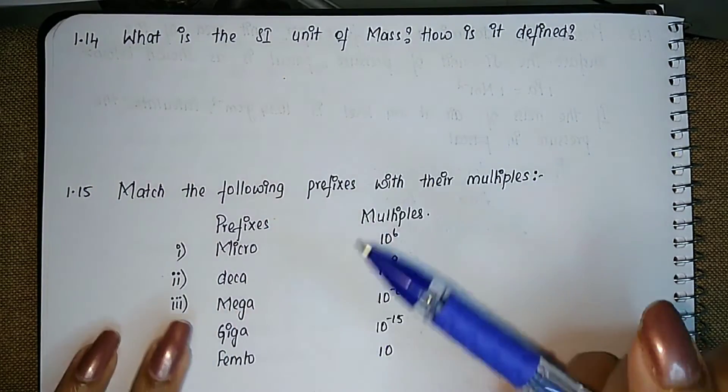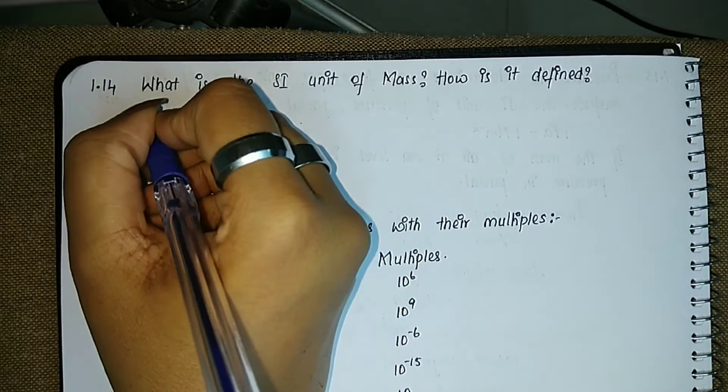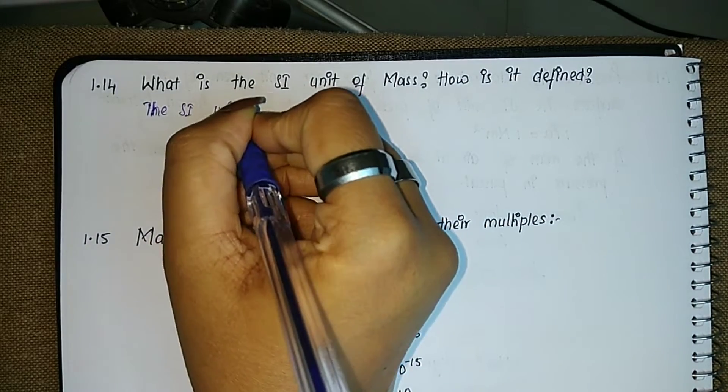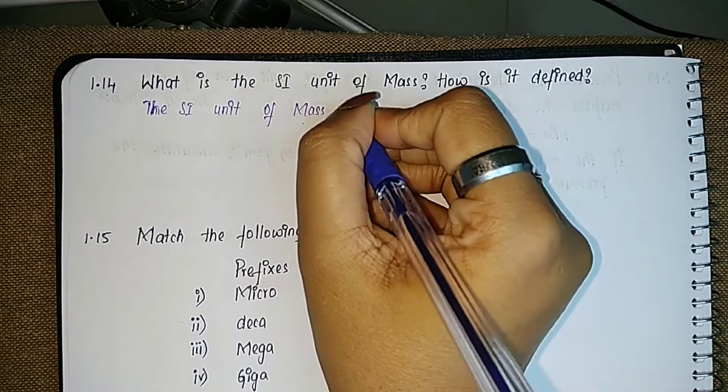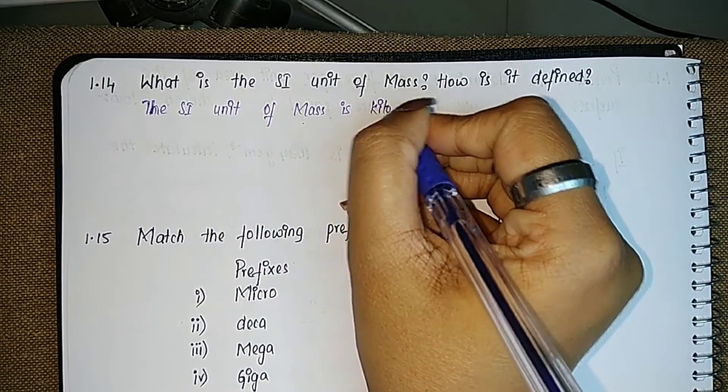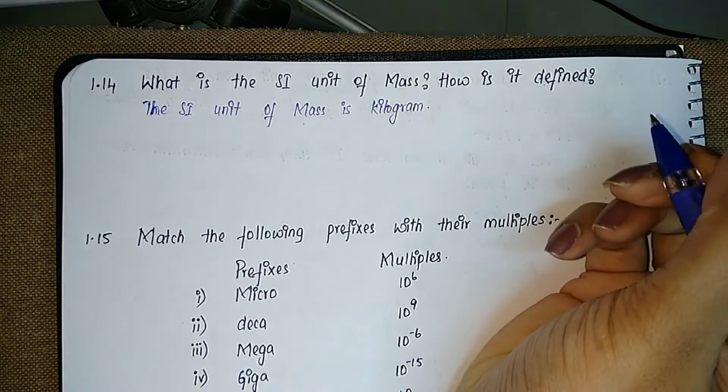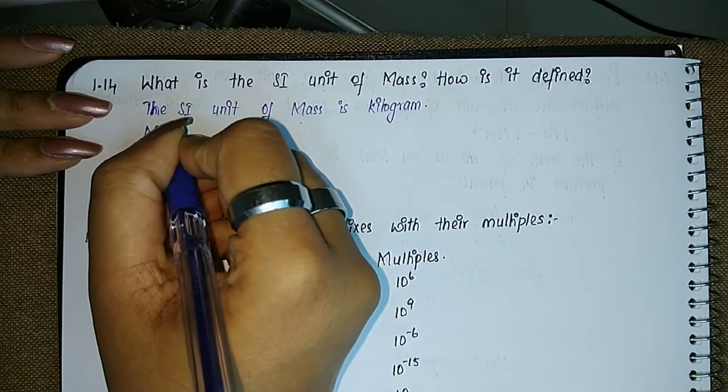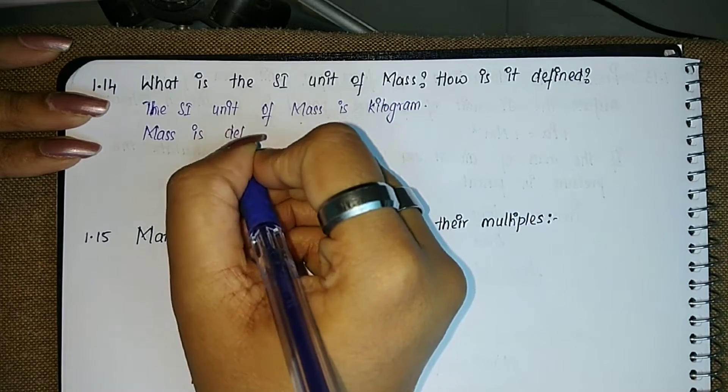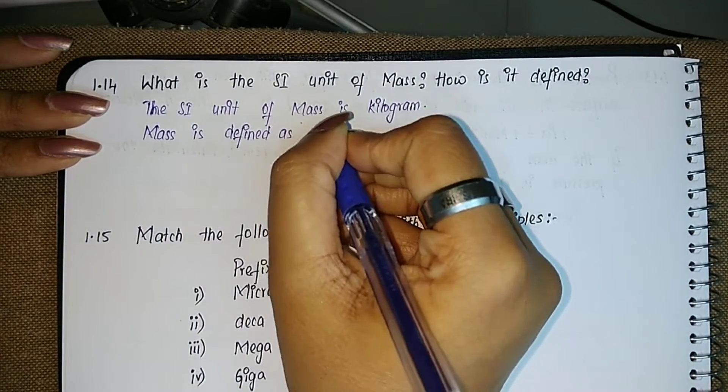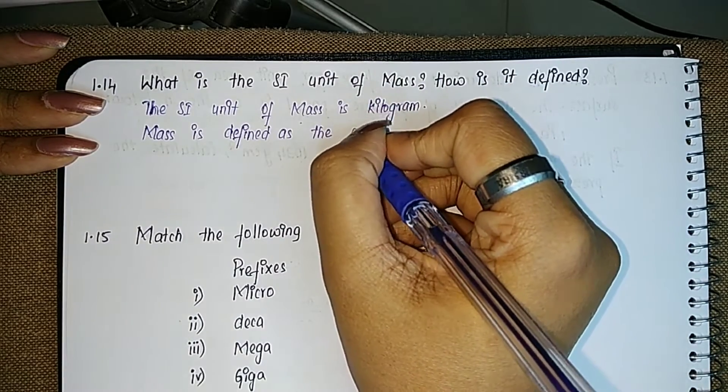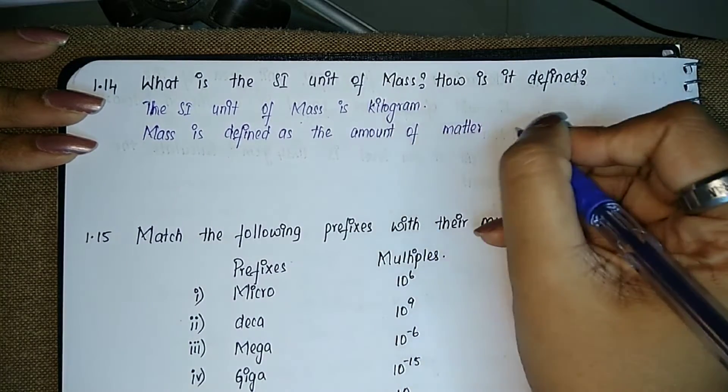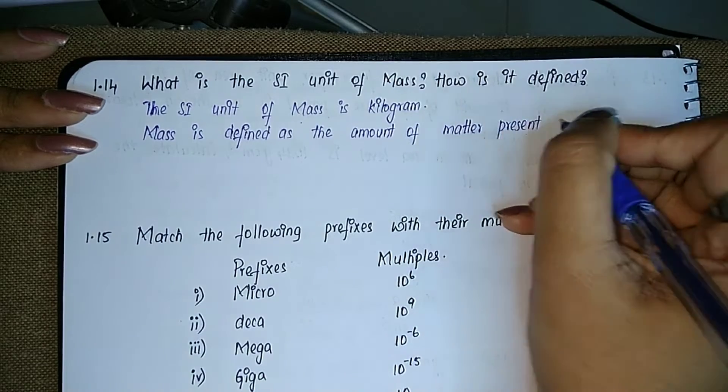So here, the SI unit of mass is kilogram. And how is it defined? We will write: mass is defined as the amount of matter present in it.